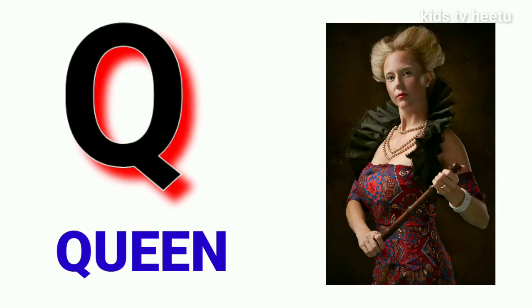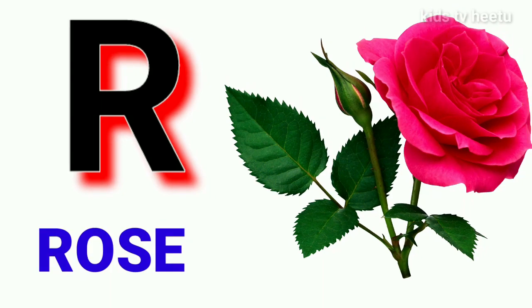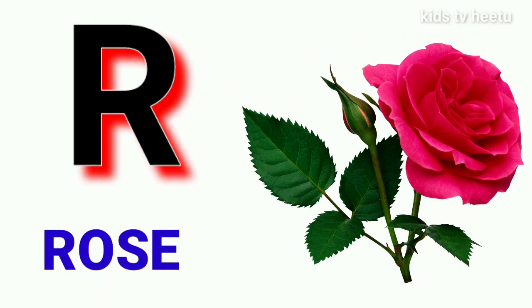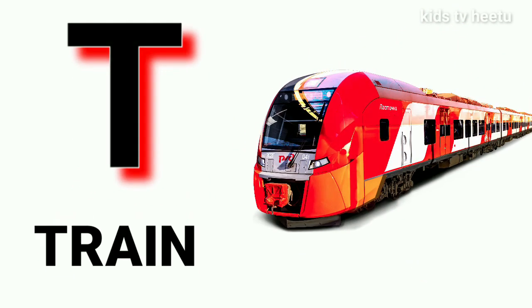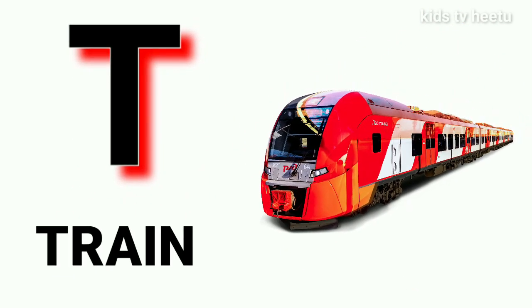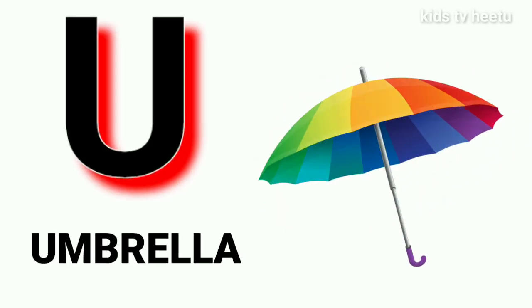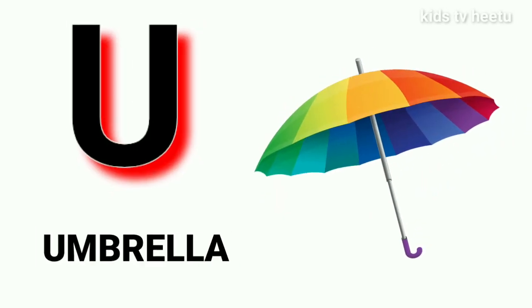Q for queen, R for rose, S for sun, T for train, U for umbrella.